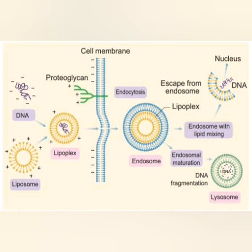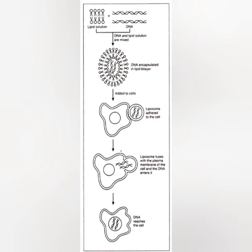Some cationic liposomes containing DC-Chol (dimethylaminoethane-carbonyl cholesterol) and DOPE (dioleoylphosphatidylethanolamine) show high transfection activity. However, overall the transfection efficiency is low in liposome-mediated gene transfer. These are four of the methods of gene transfer, and the remaining two or three methods will be discussed in the second part.